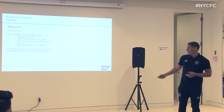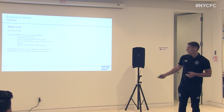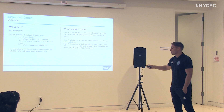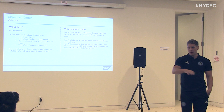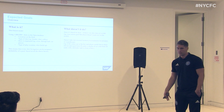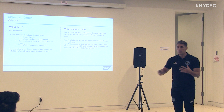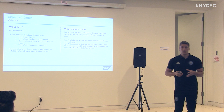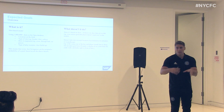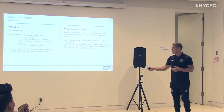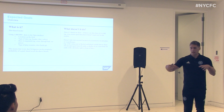What expected goals doesn't do — and we need to understand the limitations as well — is account for missed opportunities where no shot was taken. For example, if a cross goes across the six-yard box past the goalkeeper to an empty net but nobody's there to tap it in, we can't quantify that because a shot didn't happen. That's a limitation, but not the major one. The major limitation is that it doesn't account for the location of teammates, defenders, and goalkeepers — who's in front of the player when they take the shot. We're not accounting for player positions when a shot is blocked.